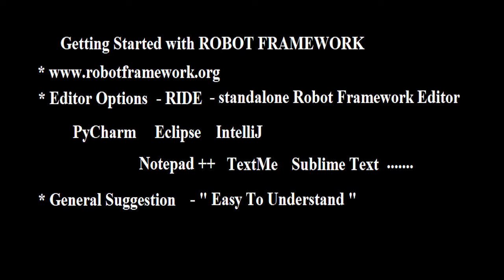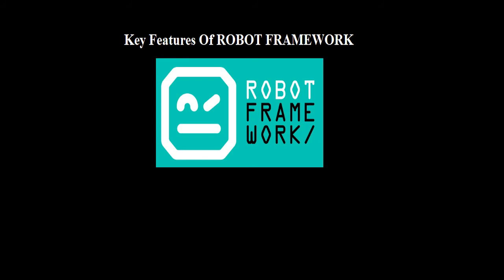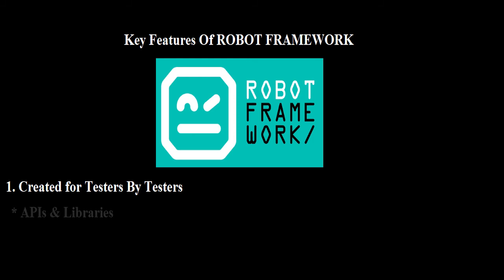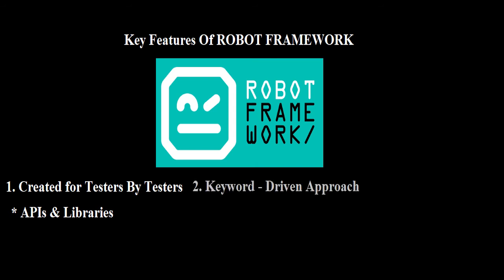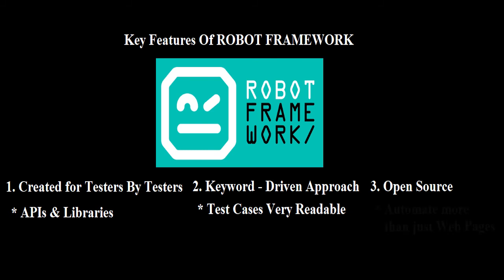Now let us briefly talk about the key features of Robot Framework. The first key feature is that Robot Framework was created for testers by testers, making it very handy for testing engineers because of the APIs and libraries in it. The second key feature is its keyword-driven approach, which makes test cases very readable. The last key feature is that it is open-source, which means it supports automating more than just simple web pages — you can automate many more things with it.